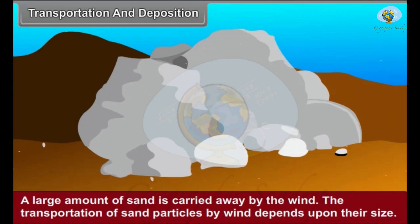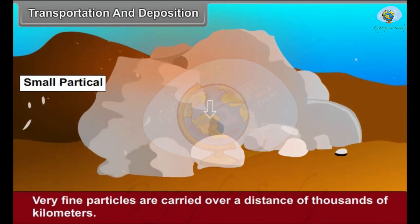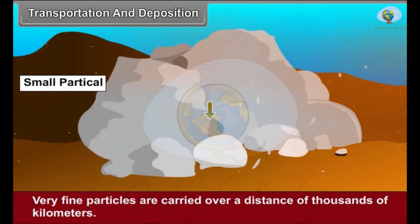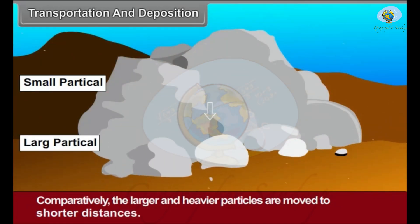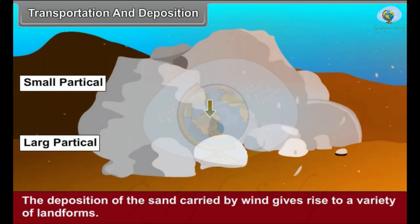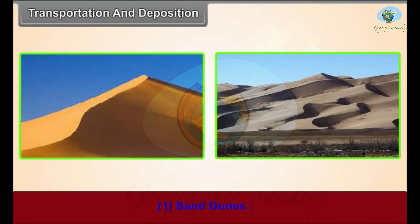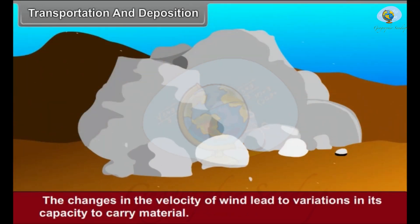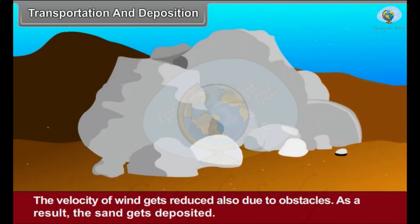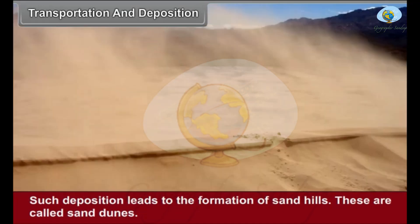Transportation and deposition: A large amount of sand is carried away by the wind. The transportation of sand particles by wind depends on their size. Very fine particles are carried over thousands of kilometers, while larger and heavier particles are moved shorter distances. The deposition of sand carried by wind gives rise to a variety of landforms. Changes in the velocity of wind lead to variations in its capacity to carry material, and velocity is also reduced by obstacles. As a result, sand gets deposited, forming sand hills called sand dunes.